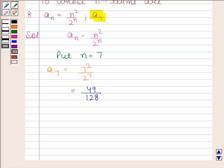Hence the required 7th term, that is a7, is equal to 49 by 128. This is our required answer. So this completes the session. Bye and take care.